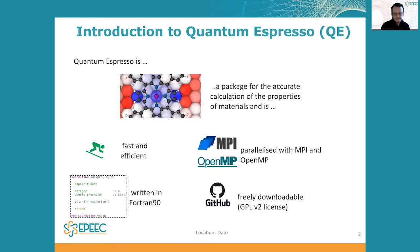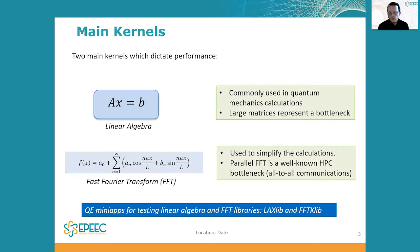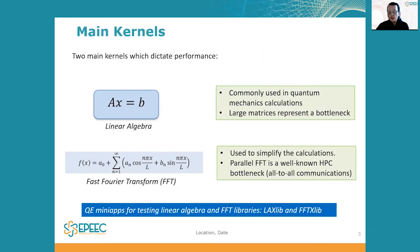In terms of performance, there are two known bottlenecks in Quantum ESPRESSO: the linear algebra component and the Fast Fourier Transform. Linear algebra is very common in electronic structure calculations — it involves managing large matrices, which can take quite a long time. The FFT is needed to transform between coordinate representations many times during a calculation. Quantum ESPRESSO provides two mini-apps to test these: LAXlib and FFTXlib.